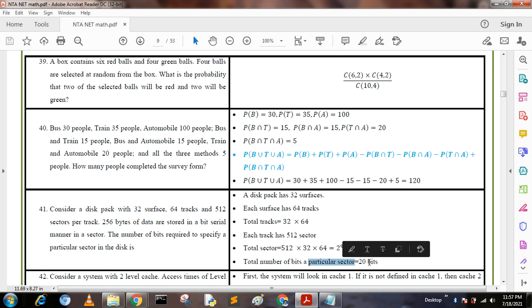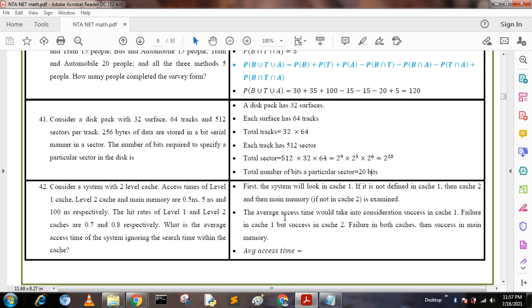Next question: Consider a system with two-level cache. Access times of level one cache, level two cache, and main memory are 0.5 nanoseconds, 5 nanoseconds, and 100 nanoseconds respectively. The hit ratio of level one and level two cache are 0.7 and 0.8 respectively. What is the average access time of the system? Ignoring the search time during cache, first the system will look in cache one. If not found in cache one, then cache two and main memory. If not found in cache two, it is examined.